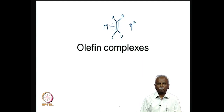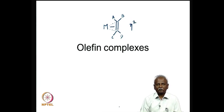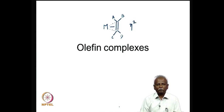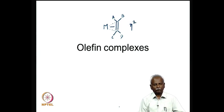Let us take a look at some of these complexes. It is interesting that there is a very similar bonding pattern between olefins and metals and carbon monoxide and metals. The give-and-take of electrons that we discussed with metal carbonyl complexes exists with metal olefin complexes also. The types of syntheses we encounter in metal olefin complexes are very similar to what we encounter in metal carbonyls. We will examine a few structures and the bonding pattern in these molecules today.